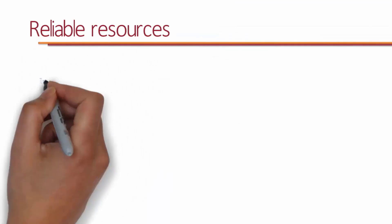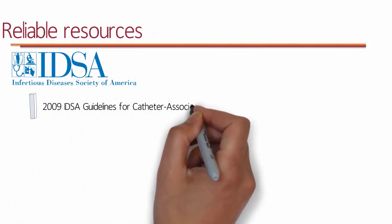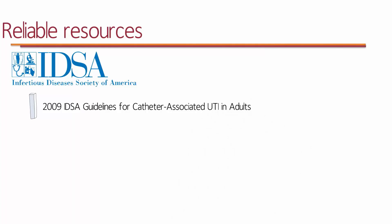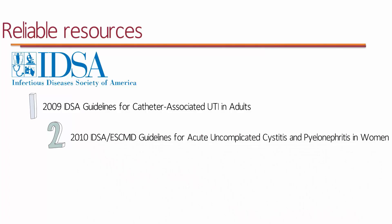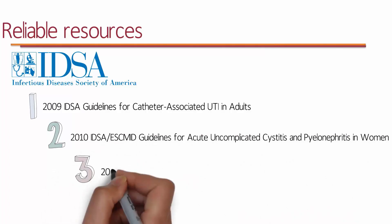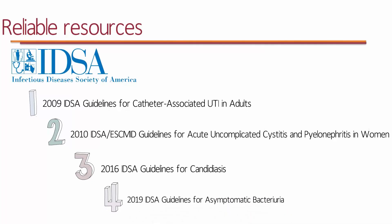IDSA — the Infectious Diseases Society of America — develops clinical practice guidelines for infectious diseases. Key guidelines include the 2009 IDSA guidelines for catheter-associated UTIs in adults, the 2010 IDSA guidelines for acute uncomplicated cystitis and pyelonephritis in women, the 2016 IDSA guidelines for candidiasis which includes recommendations for candiduria, and the 2019 IDSA guidelines for asymptomatic bacteriuria.